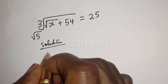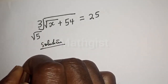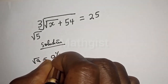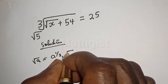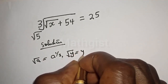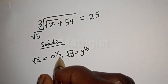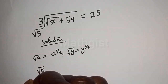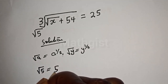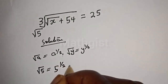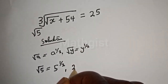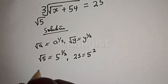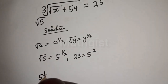Solution. Take note that if you have square root of a, this is equal to a raised to power one over two. Also if you have square root of y, this is equal to y raised to power one over two. So square root of five is equal to five raised to power one over two, and 25 is equal to five squared.